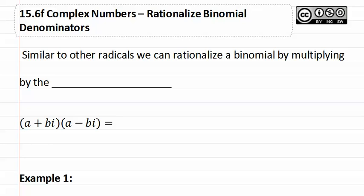Similar to other radicals, we can rationalize a binomial that has complex numbers or i's by multiplying by the conjugate.